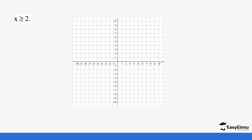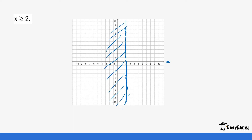Now let's represent x ≥ 2. When you have greater than or equal to in your inequality, you use a bold line. We go to the x-axis where 2 is and draw a bold line. We then interpret the inequality: the values of x are greater than or equal to 2, so we take all values above 2. We shade the unwanted region — all values below 2 — leaving the wanted region unshaded above 2.